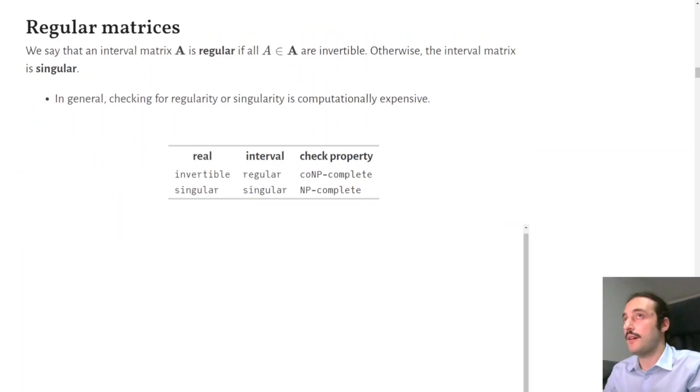A final concept that we need before going into the interval linear system is the concept of regularity. We say that an interval matrix A is regular if all the real matrices in the interval matrix are invertible. Otherwise, we say that the interval matrix is singular. And it's good to know that, in general, checking for regularity or singularity of interval matrices actually has exponential complexity.